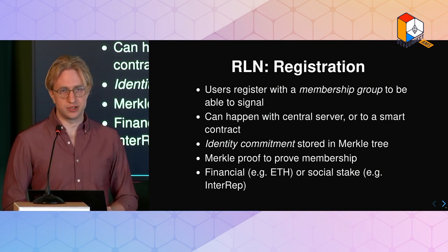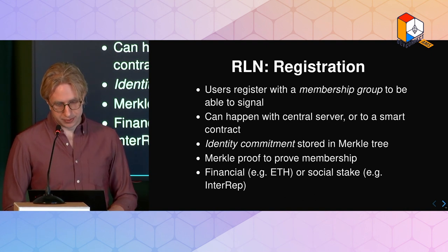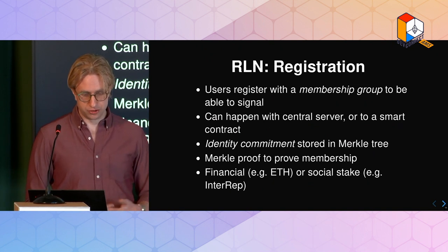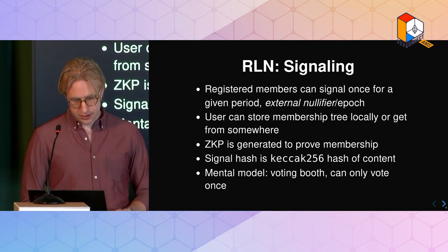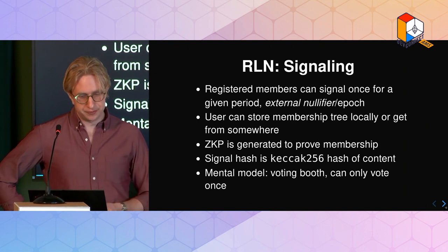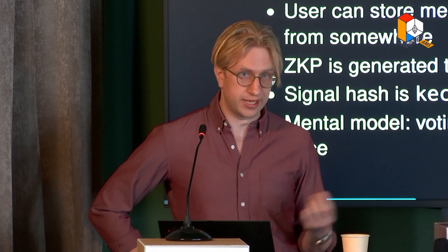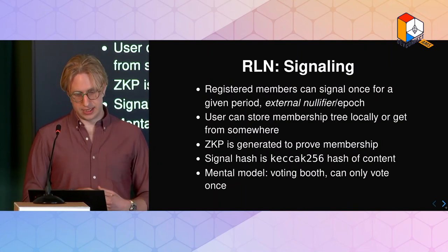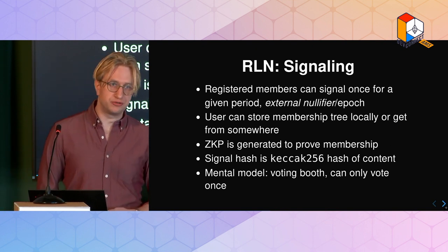You have an identity secret that's generated as a random byte value, which you hash twice to get the identity commitment. Then you have a Merkle proof. For the signaling, registered members can signal once for a given period, or N times in a given period - the external nullifier slash epoch. Users can store a membership tree either locally or get it from somewhere. You then generate a zero-knowledge proof to prove membership, hash the signal - the actual content you want to send. The mental model is a voting booth where you can only vote once.